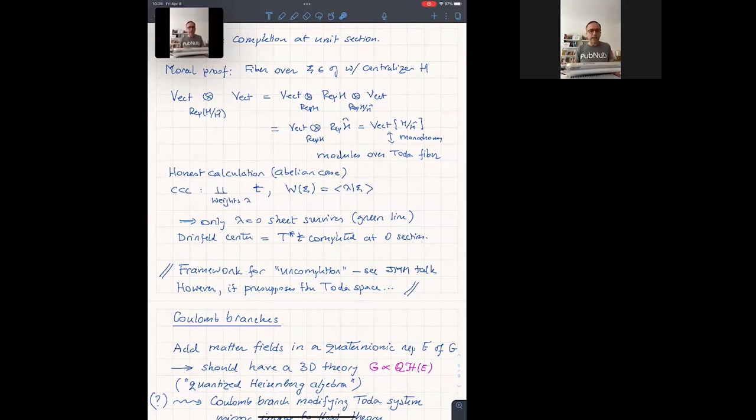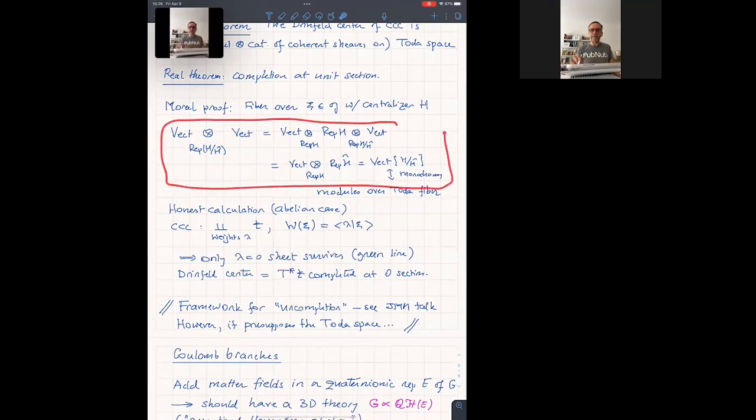So the only surviving sheet has lambda equals zero. Everything else dies. This has no critical points. So Drinfeld center is just the completion at zero of the cotangent space, which is also a completion at zero inside the Toda system. But you've lost somehow, you've lost the fiber and the fact that it was periodic. So I should point out there is a framework for uncompleting the calculation. I gave a talk at the gym a couple of days ago. However, it'd be dishonest to invoke it here because in that framework, the only way I can make it work is by starting with the Toda space and then uncomplete calculations make sense.